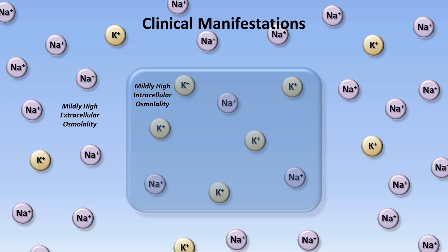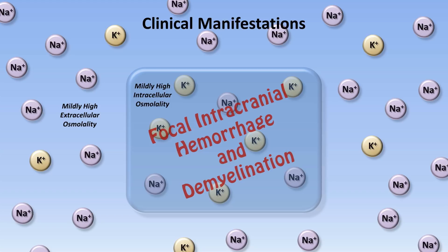Unfortunately, if it happens too rapidly or to an extreme degree, it risks triggering either focal intracranial hemorrhage or demyelination, the latter presumably from a similar mechanism to the development of osmotic demyelination that occurs when hyponatremia is corrected too quickly.